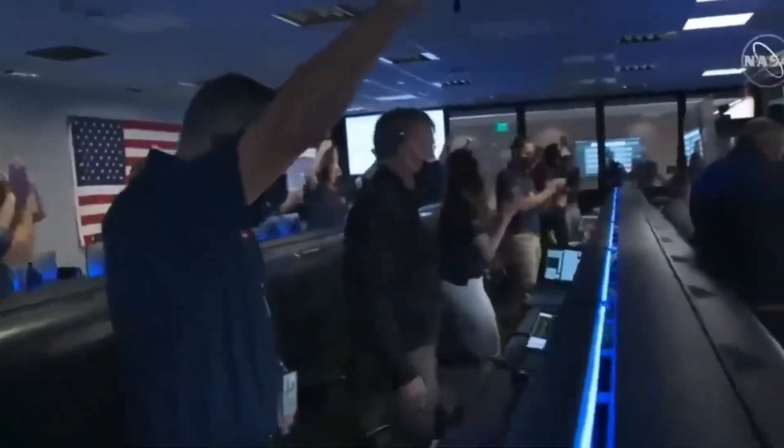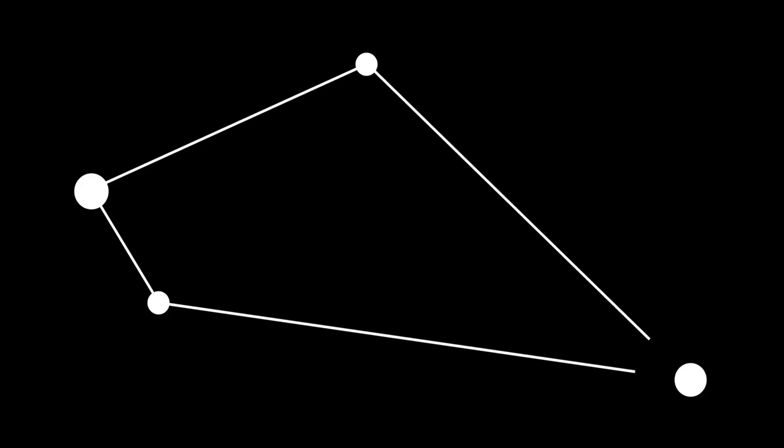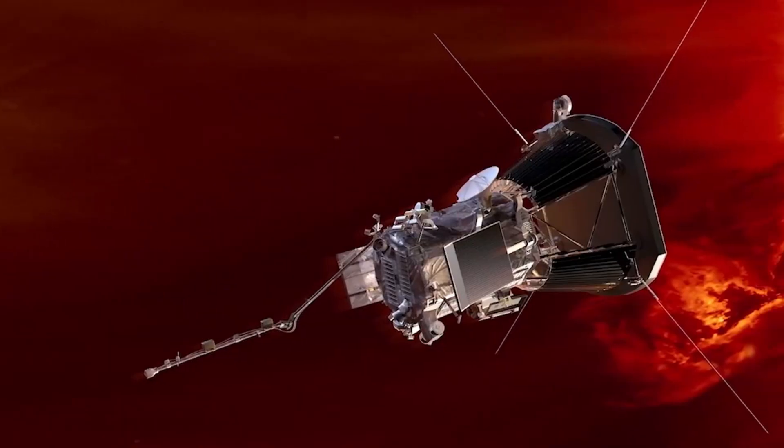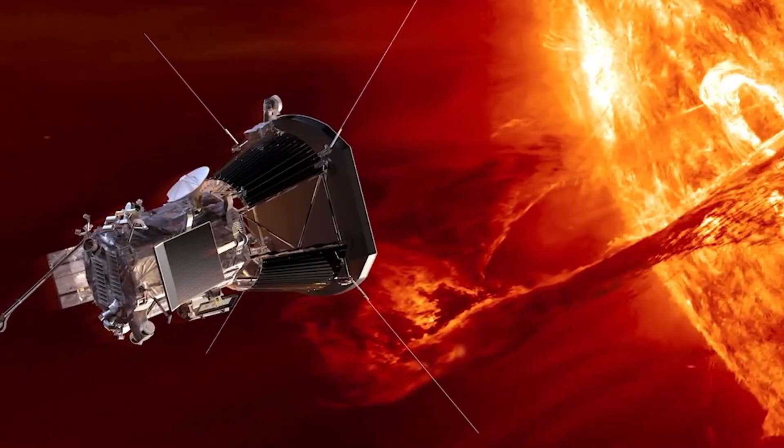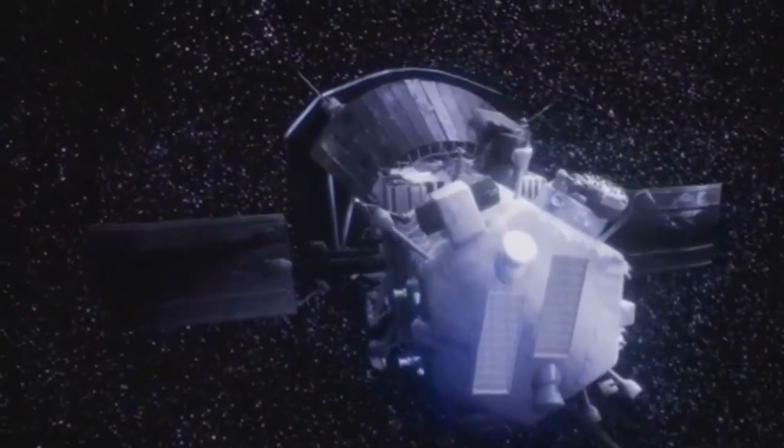Parker Solar Probe is scheduled to make two more visits to the Sun this year, approaching our mother star on March 22nd and June 19th at roughly the same speeds and distances. A look back in time shows the remarkable insights the probe has already provided about the Sun and how it has literally been seen in a new light ever since.